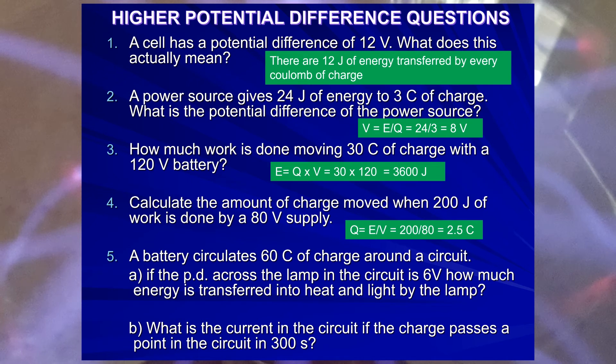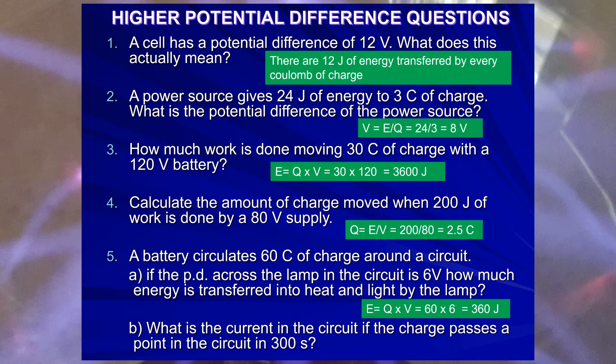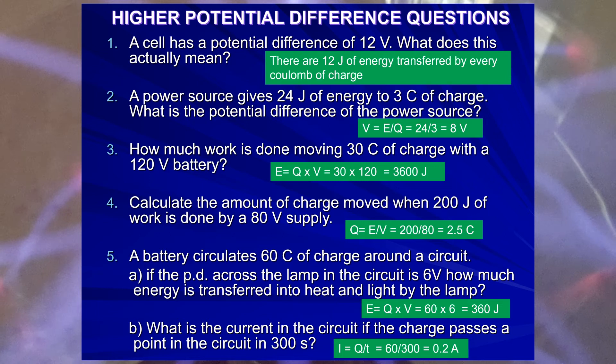So, remember, potential difference, posh word for voltage. E is the work done. Work done, remember. Energy transferred and watch that last other question there. Oh, look! Aren't I cheeky? I've thrown in a different equation. They will link these equations together. I equals Q over T, or Q equals I times T, and E equals Q times V. They go naturally together, so it's likely to be a part A and a part B of a question. My work is done. See what I did there? My work is done. Goodbye.